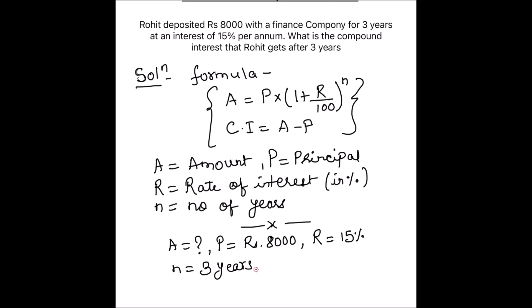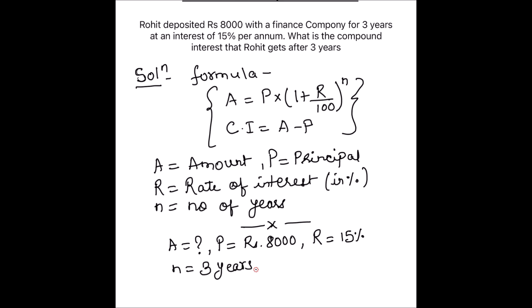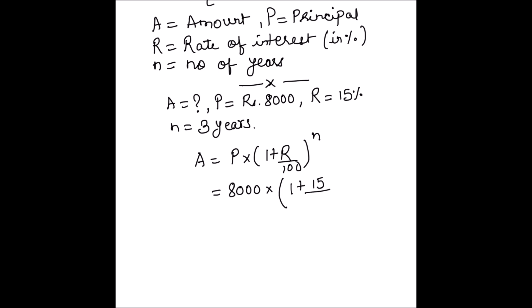Now let's put these values in the formula. Amount equals P times (1 plus R upon 100) whole raised to power N. So this becomes 8000 times (1 plus 15 divided by 100) whole raised to power 3.